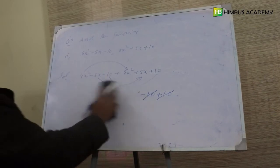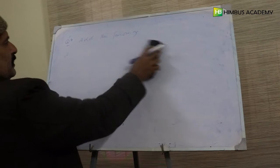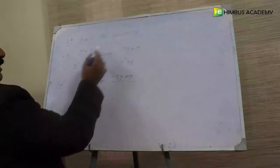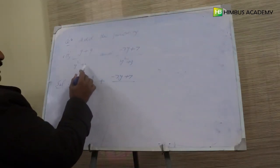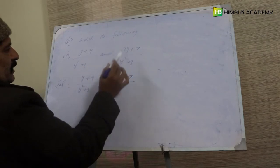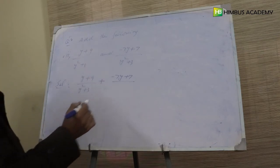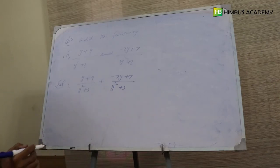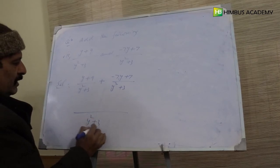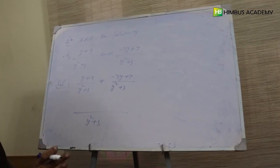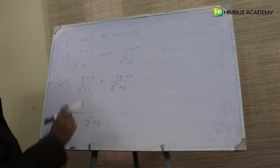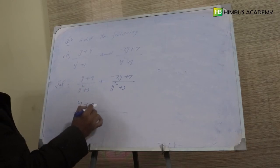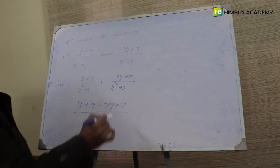Number four ka second part: add the following — y plus nine over y square plus three, and minus seven y plus seven divided by y square plus three. Yahan y square plus three denominators same hain, isliye LCM ki zaroorat nahin. LCM tab lete hain jab denominator different ho. Jab same ho to ek common denominator le lo aur upar wale numerators ko aise likhte hain: y plus nine minus seven y plus seven.